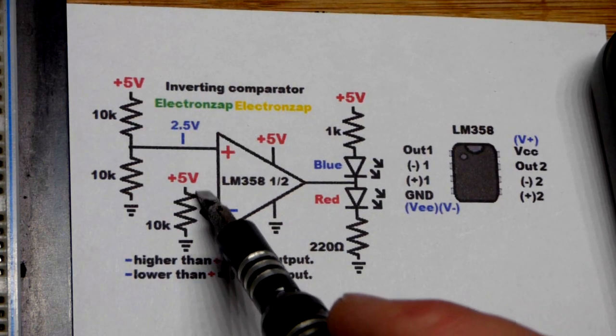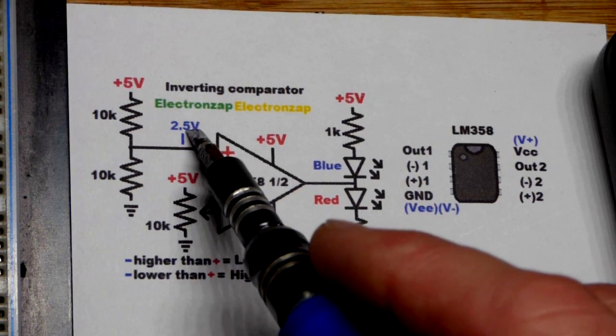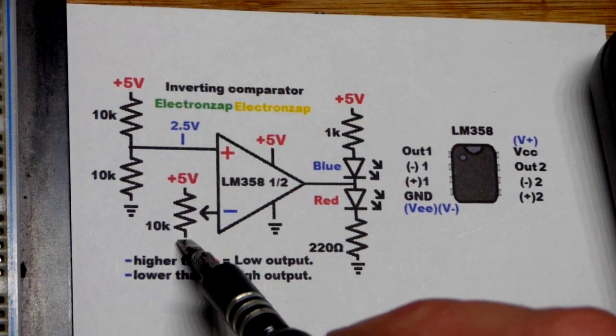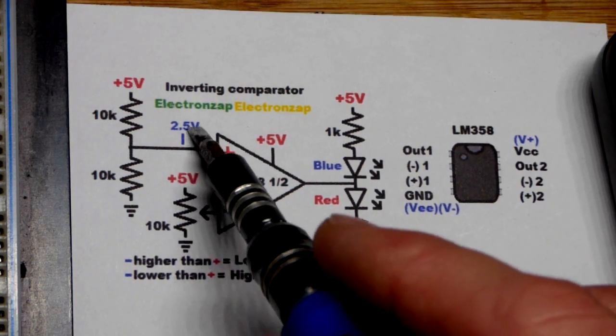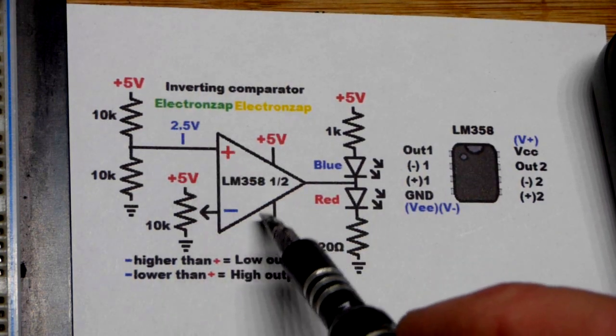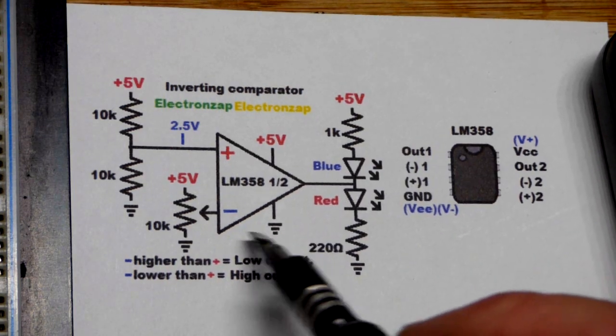So if we are above 2.5 volts with our trim pot because we got the full supply voltage across it, if we go up above halfway, that's a higher voltage than we got there. So we end up with a low output. The blue LED lights up.